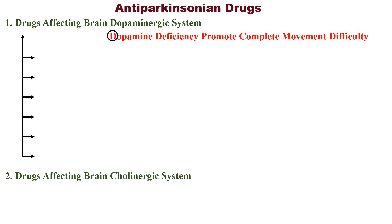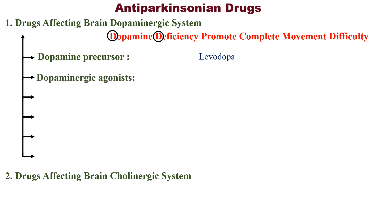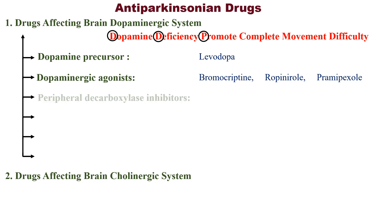In the mnemonic: D stands for Dopamine precursor — example is levodopa. The second D stands for Dopaminergic agonist — examples are bromocriptine and ropinirole. P stands for Peripheral decarboxylase inhibitor — examples are carbidopa and benserazide.